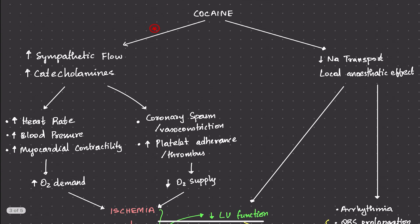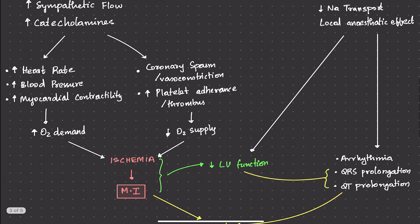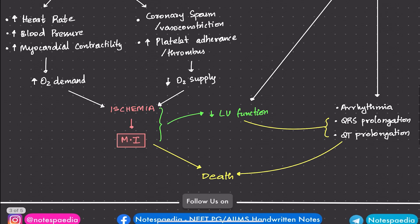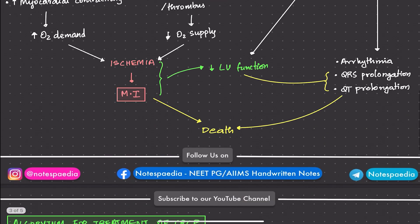On a parallel pathway, cocaine also decreases sodium transport, blocking sodium channels. This produces a local anesthetic effect, decreasing action potential conduction. This leads to decreased left ventricular function and arrhythmias — including QRS prolongation and QT prolongation — further reducing LV function. QT prolongation itself can also cause death. So there are two distinct pathways by which cocaine can be lethal.